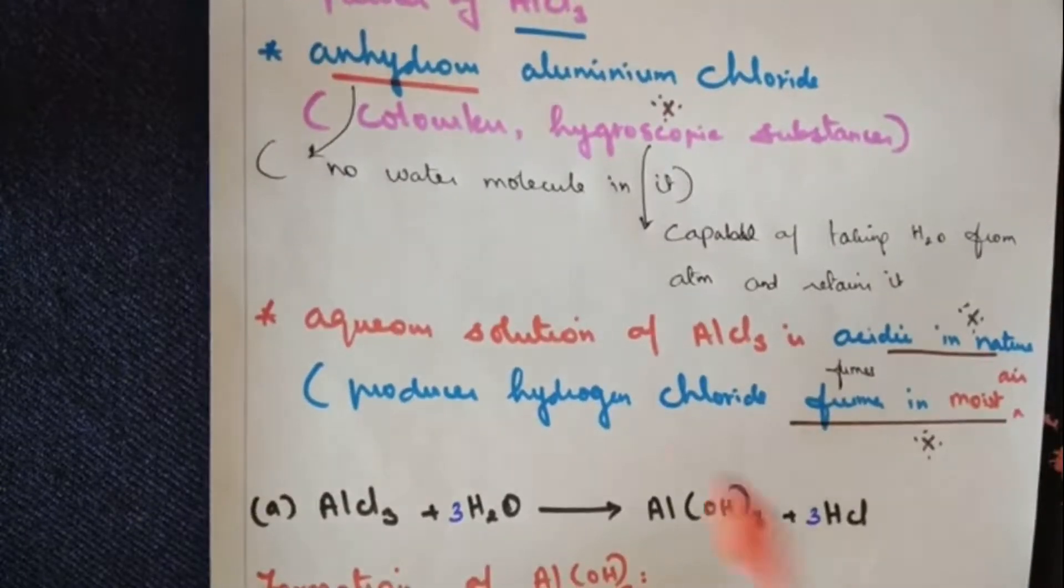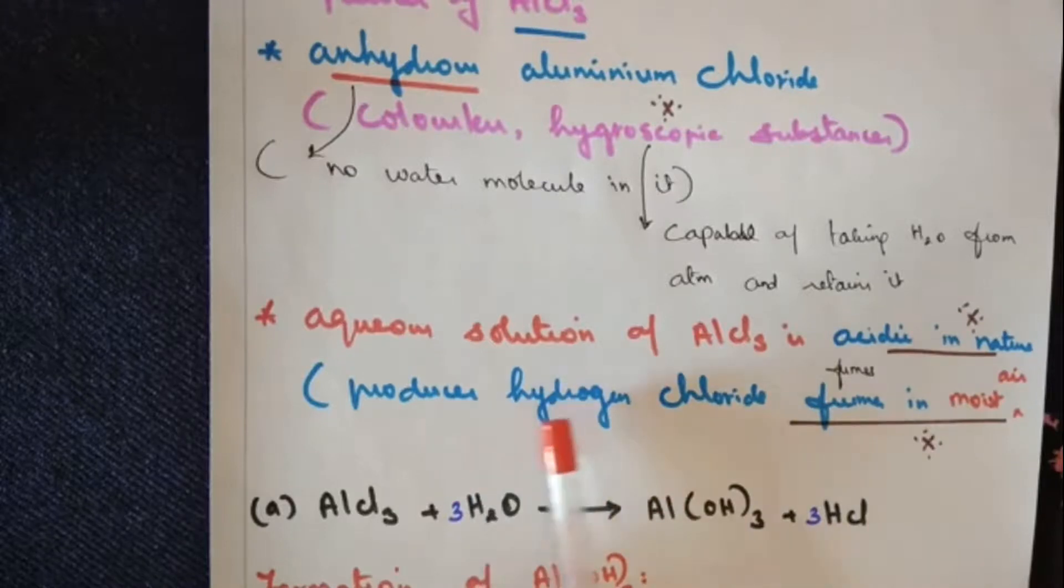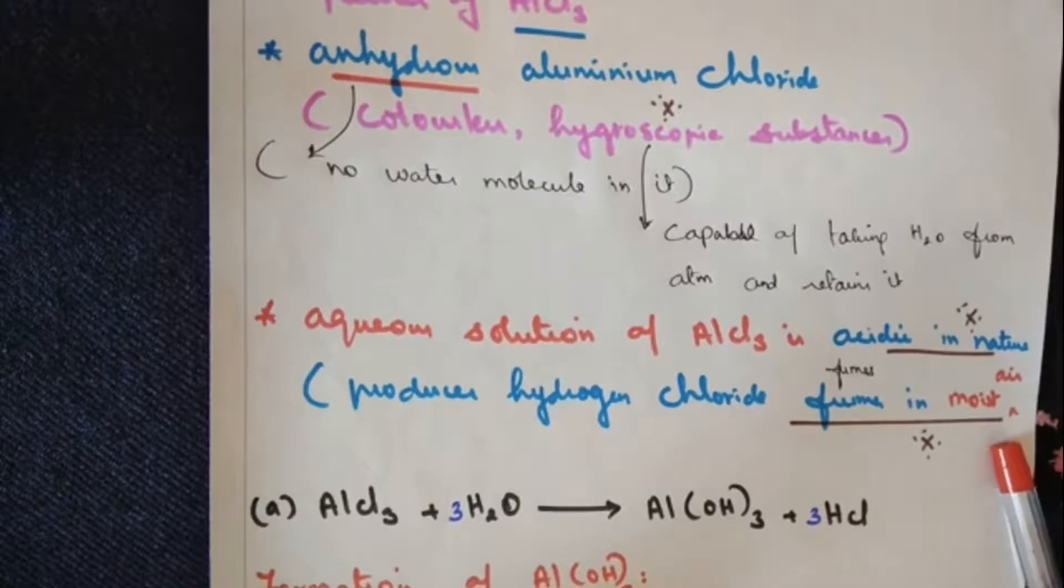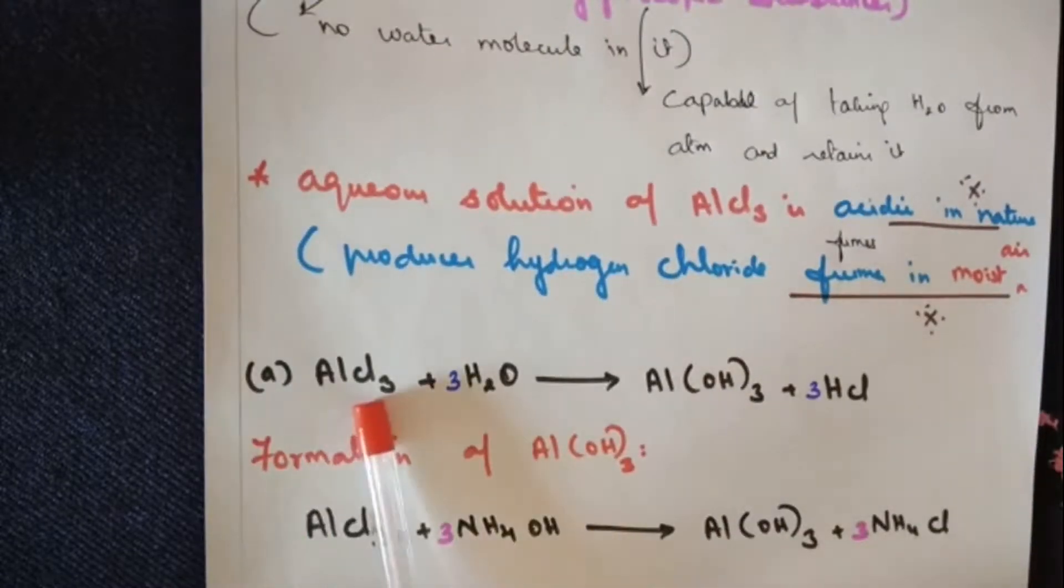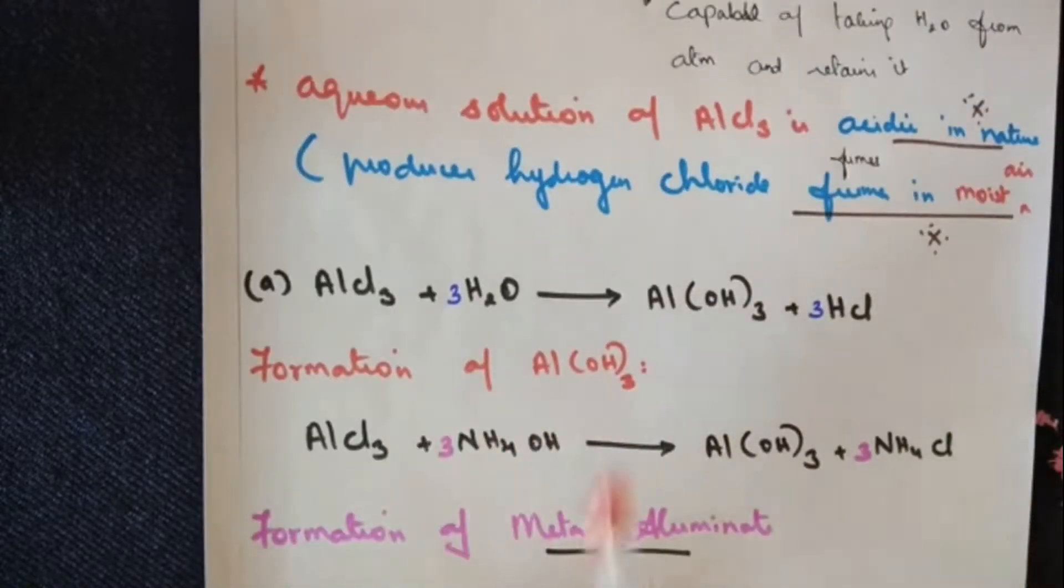Coming to aqueous solution of AlCl3, it's acidic in nature, meaning it releases protons. It also produces hydrogen chloride fumes in moist air. In one mark point of view you need to remember these points. Aluminium chloride when you treat with water, aluminium hydroxide is produced along with HCl.